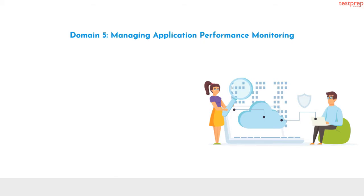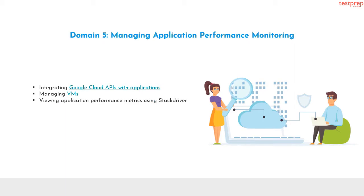Domain 5 is managing application performance monitoring. It contains four subtopics: integrating Google Cloud APIs with applications; managing VMs; viewing application performance metrics using Stackdriver; and diagnosing and resolving application performance issues.